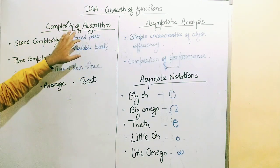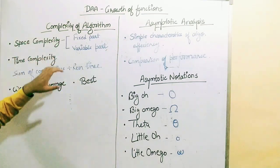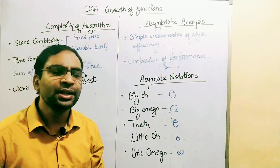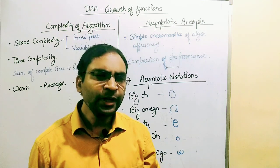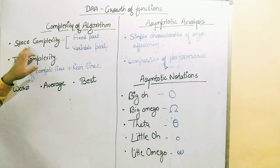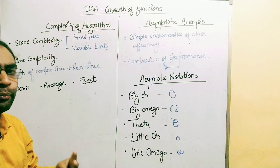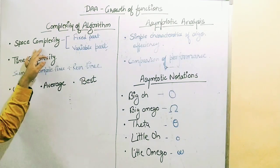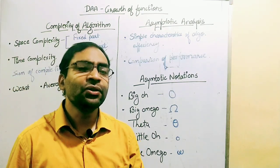For this purpose, we have to study two things: complexity of algorithms and asymptotic analysis. Complexity basically measures the performance of an algorithm. We measure the complexity of algorithms in two main ways — space complexity and time complexity. These are the two major terms under complexity of algorithms. Space complexity tells us how much space an algorithm requires to execute, and what the increase in space requirement is as the input size increases.